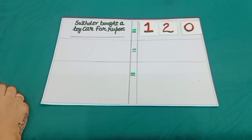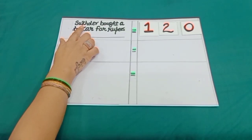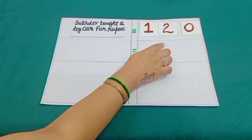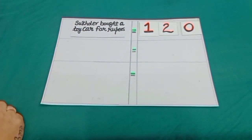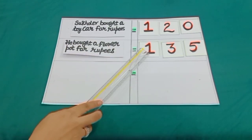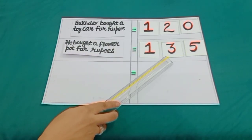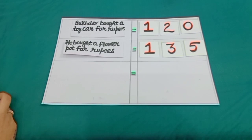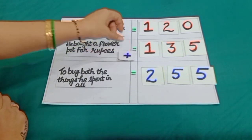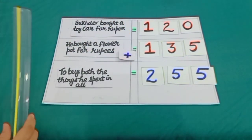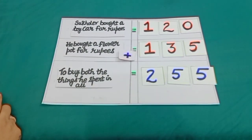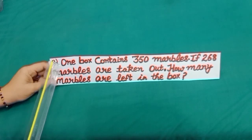Dear students, we can solve it like this also. Sukhdev bought a toy car for Rs. 120. He bought a flower pot for Rs. 135. So, to buy both the things, he spent 255 rupees in all. Sum number 2.